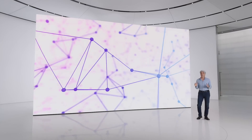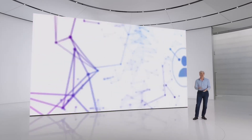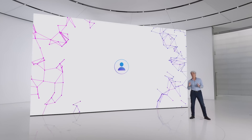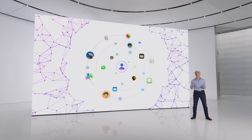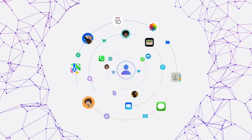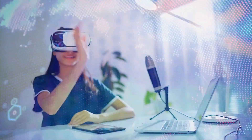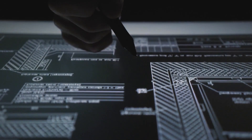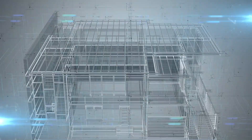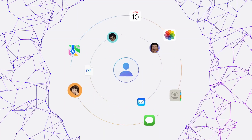The 4M model can also manipulate 3D scenes using natural language inputs. Users can describe changes they want in a 3D environment, and the AI will execute these changes. This is beneficial for architects, game developers, and virtual reality creators. For instance, an architect could describe a building design, and the AI would create a 3D model that allows for real-time adjustments and visualizations.